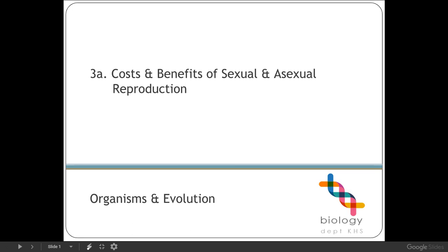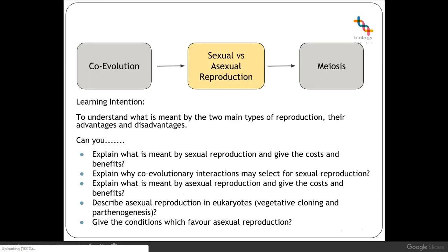Hello and welcome to this lesson for Advanced Higher Biology, which will be looking at the costs and benefits of both sexual and asexual reproduction. There is quite a lot to get through in this one, but primarily we're looking at two main types of reproduction and their advantages and disadvantages.